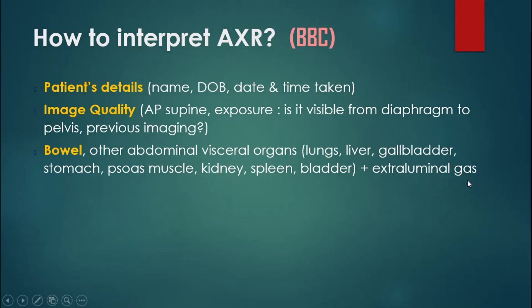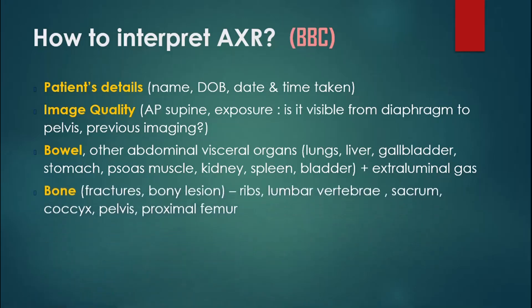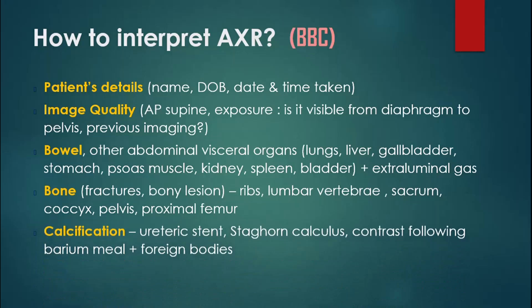The next B is bone. Here you want to mention if there is any bony lesion — like a sclerotic or lytic lesion — or any fracture. So look at all the bony areas in the abdominal X-ray.